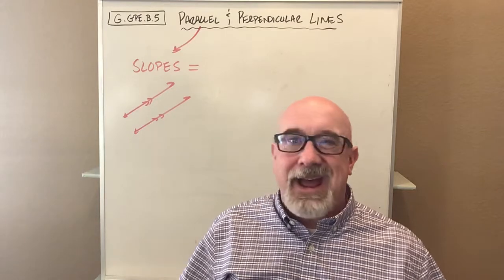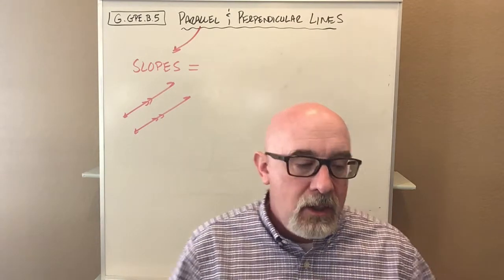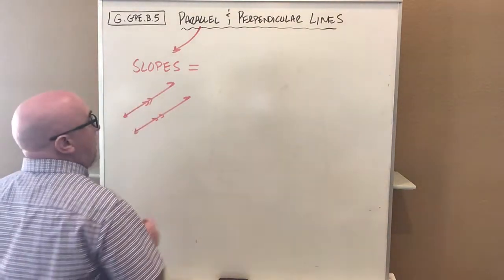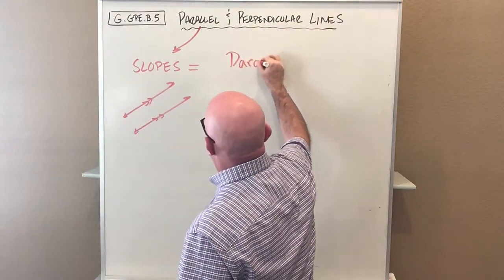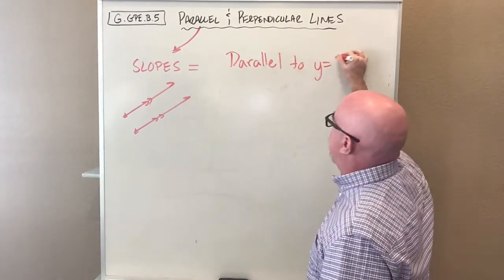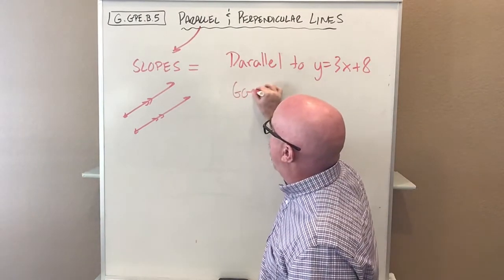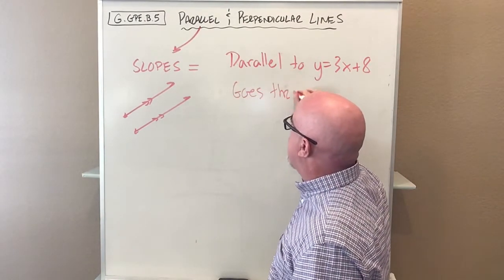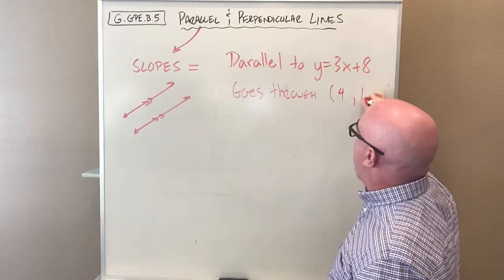How do we add to this with equations of lines? We just say something like: create a line that is parallel to y=3x+8 and goes through point (4,1).